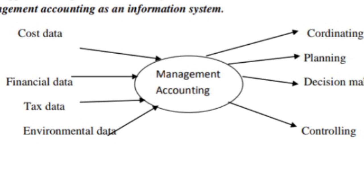After getting all this information, it is used for coordinating activities, planning, decision making, and controlling. So management accounting as an information system feeds on cost data, financial data, tax data, and environmental data, and it produces coordinating, planning, decision making, and controlling.